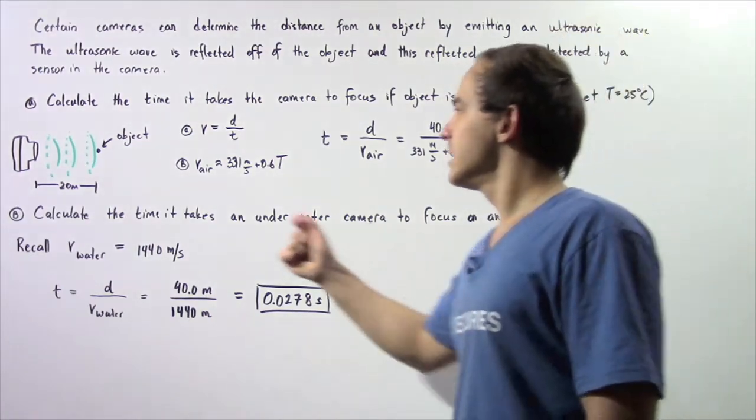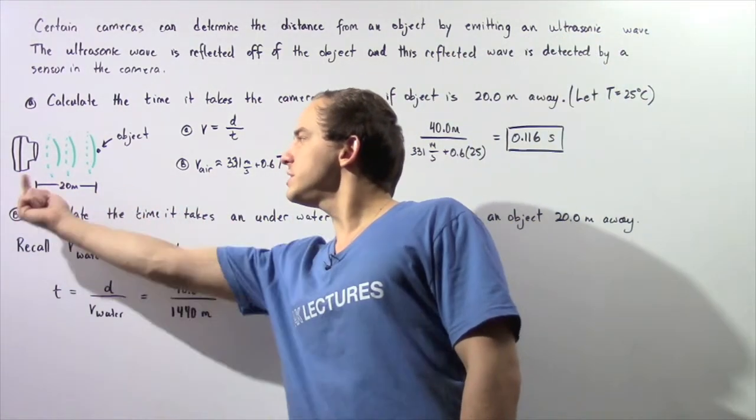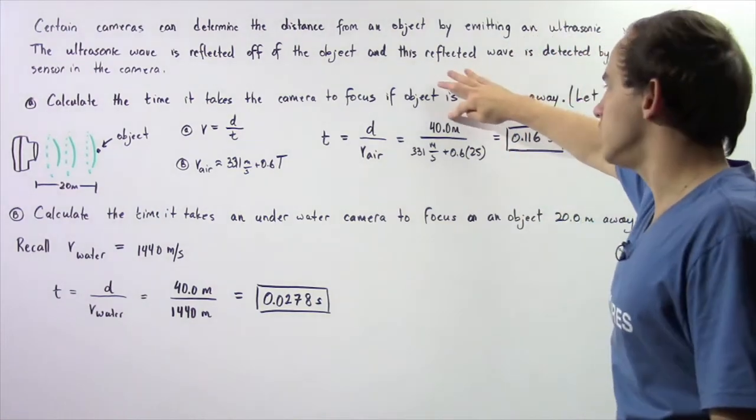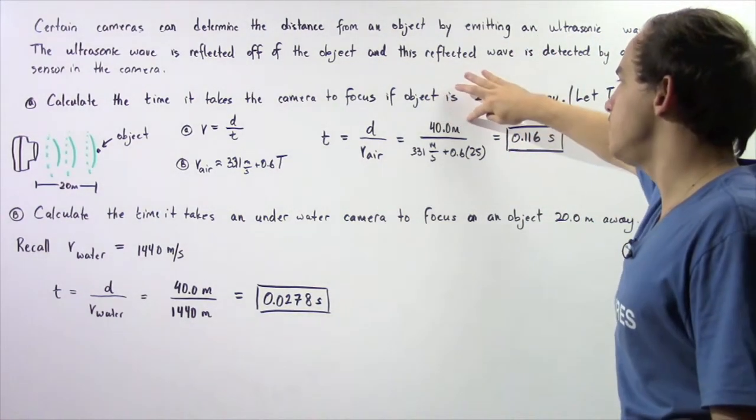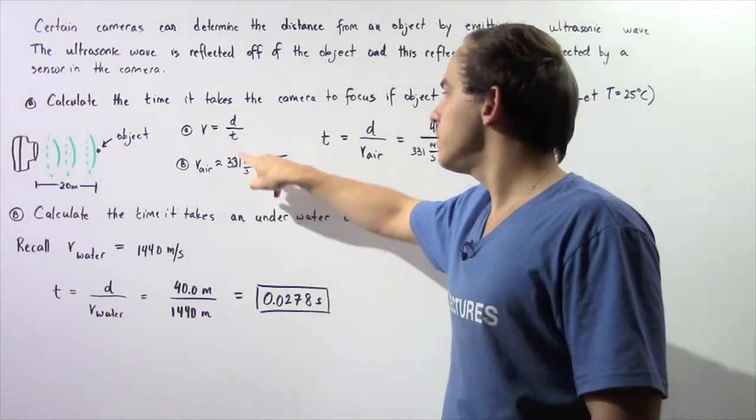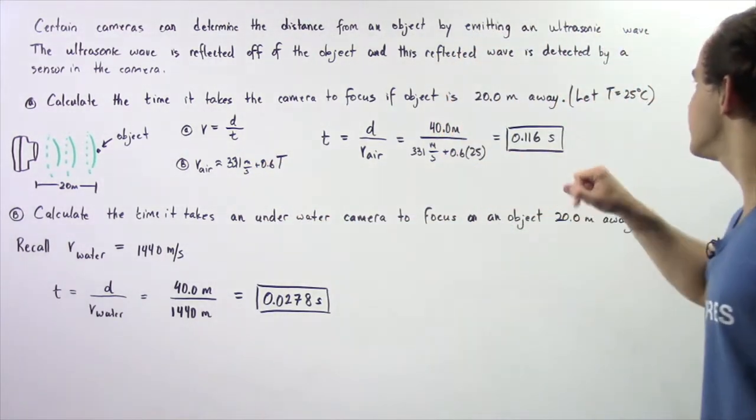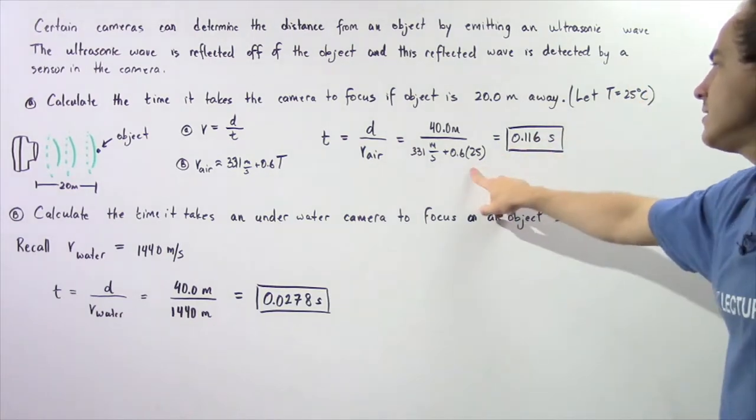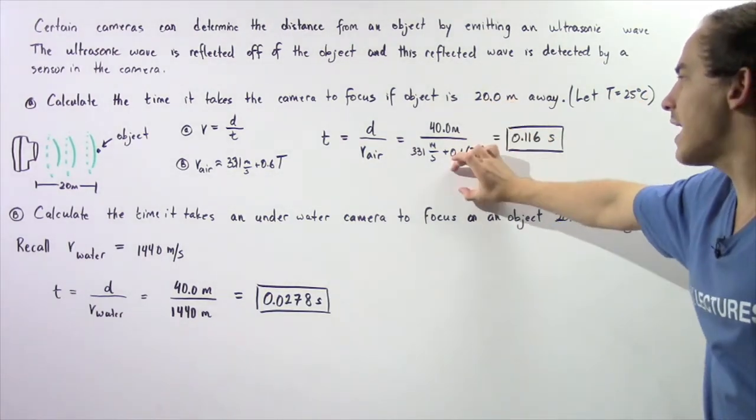The distance is simply 20 meters this way plus 20 meters back, so a total distance of 40 meters. The velocity is 331 meters per second plus 0.6 times 25 degrees Celsius. We plug these values into our calculator.